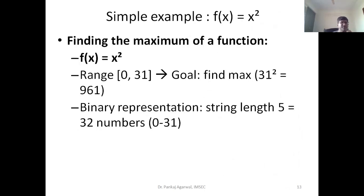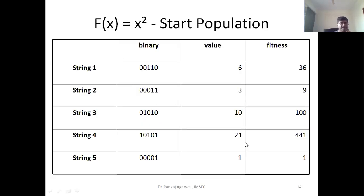Let us take a working example. Suppose I have to maximize a function f(x) = x². The input x is in the range of 0 to 31, and we need to find the value of x that maximizes x². As part of the algorithm, the solutions are in terms of x from 0 to 31. Mind you, we are not going to go in a sequential manner from 0 to 31 like a normal loop — the generation of solutions must be automatic in such a way that our search moves in the right direction toward the best solution.